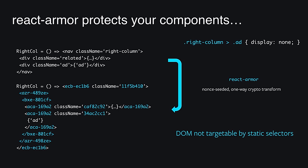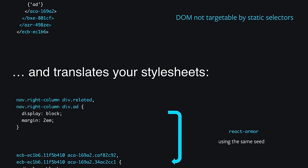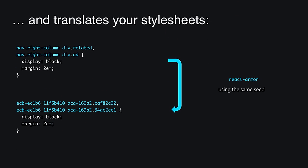I've packaged this transform into a small library called React Armor, which recursively applies all these transformations to all the components in your app. It obfuscates class names, tag names, and tree structure. The result is that no part of your DOM is targetable by static selectors. React Armor also allows you to apply the exact same translation to your stylesheets, so that you can keep using CSS to style your components while keeping your DOM safe from third-party mutations.